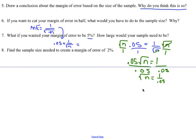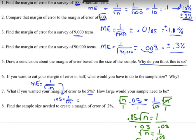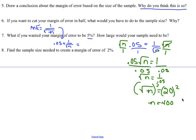We're not done yet because we have the square root of n equals 20. We want n by itself, so we square both sides: n equals 400. So if we have n=100 we get 10 percent, and if we have n=400 we get 5 percent. To halve the margin of error in that particular case, you would have to quadruple the sample size.